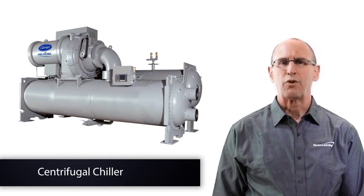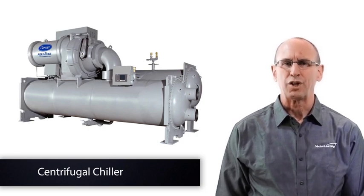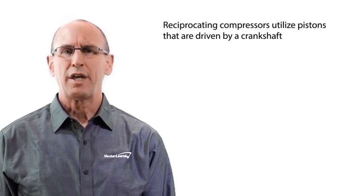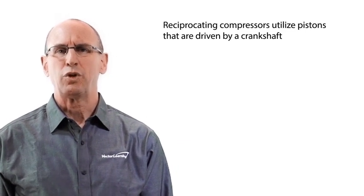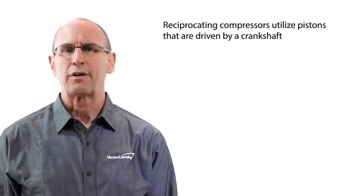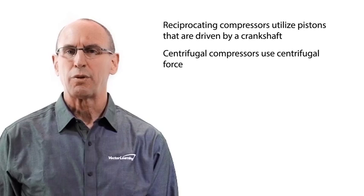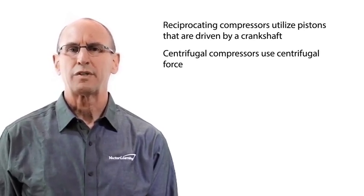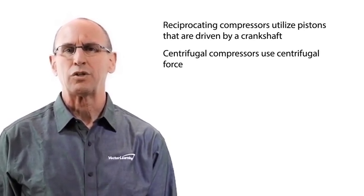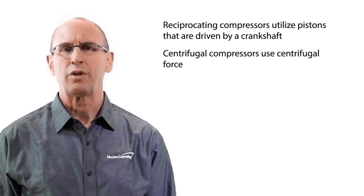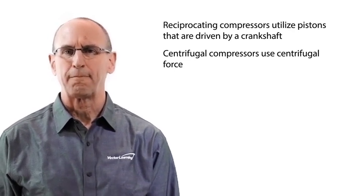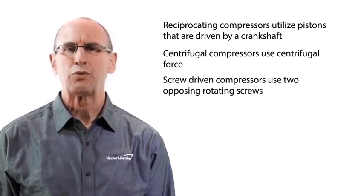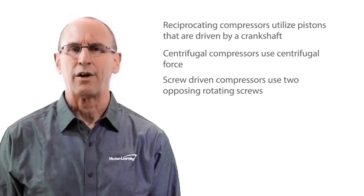Reciprocating compressors utilize pistons that are driven by a crankshaft. Centrifugal compressors use centrifugal force to compress air and are widely used in the industry due to their relatively high energy efficiency. Screw-driven compressors use two opposing rotating screws to compress air.